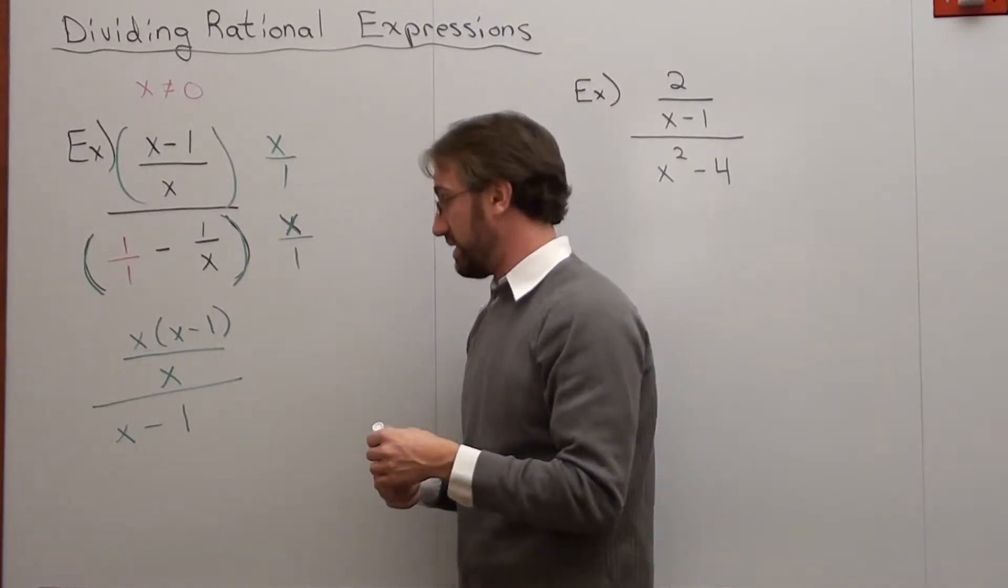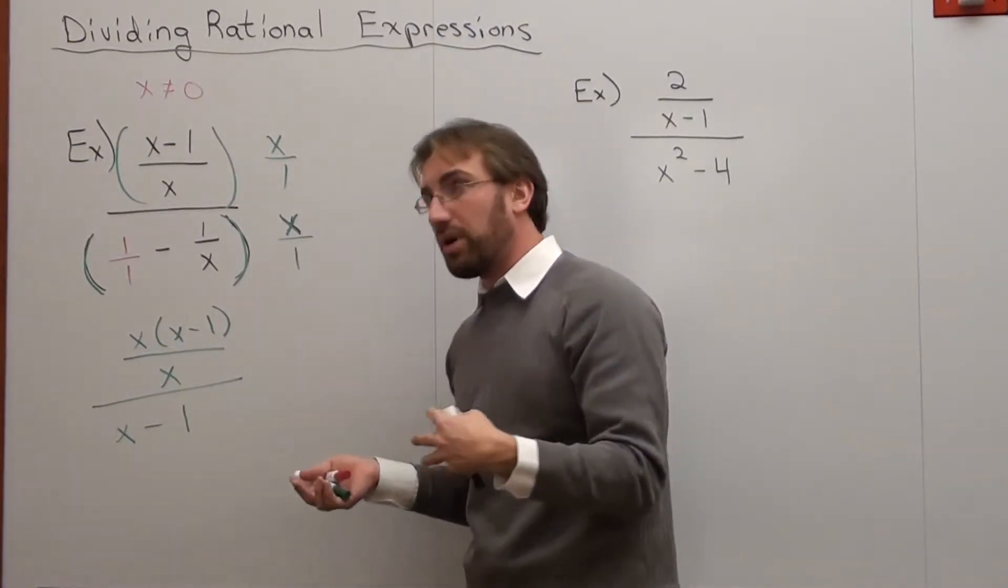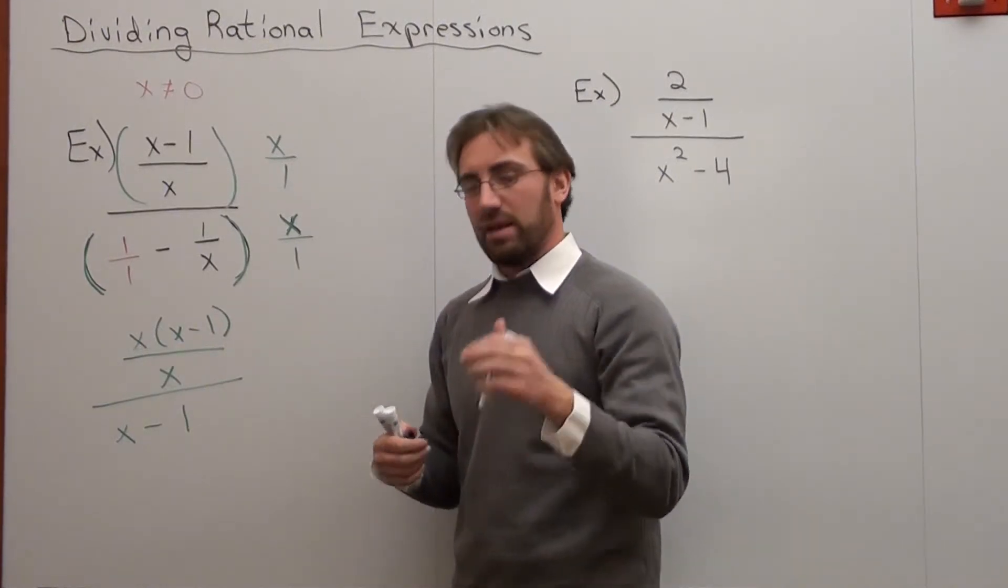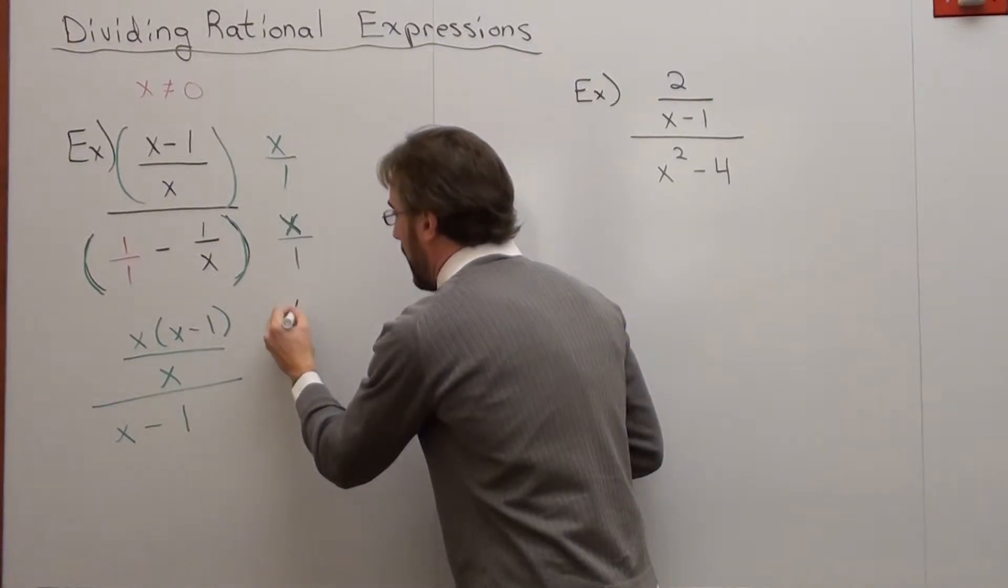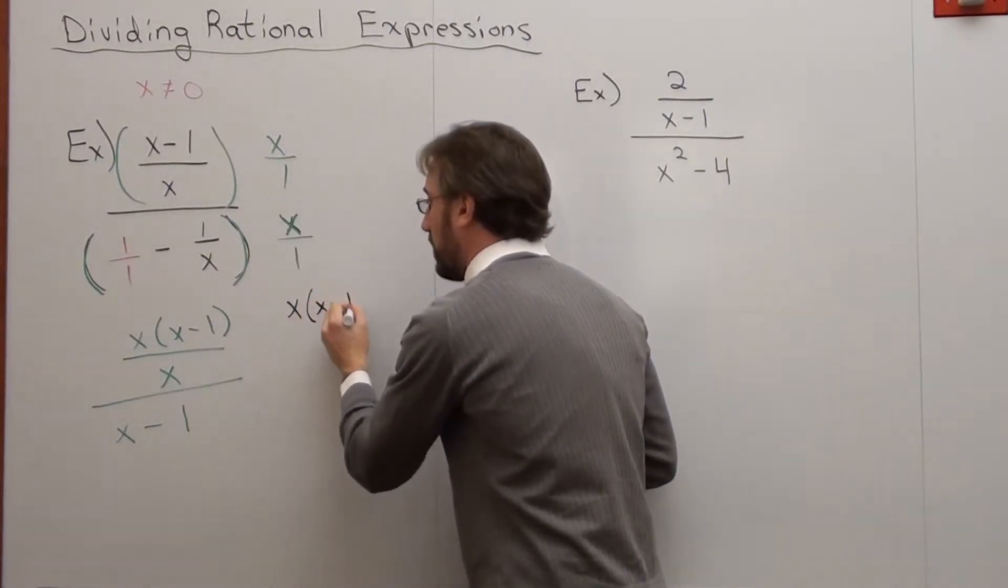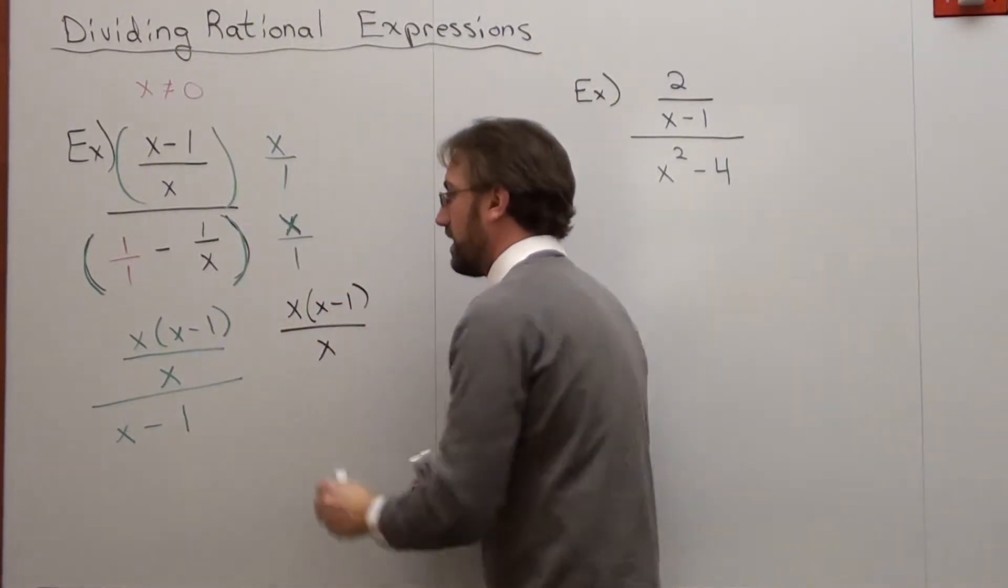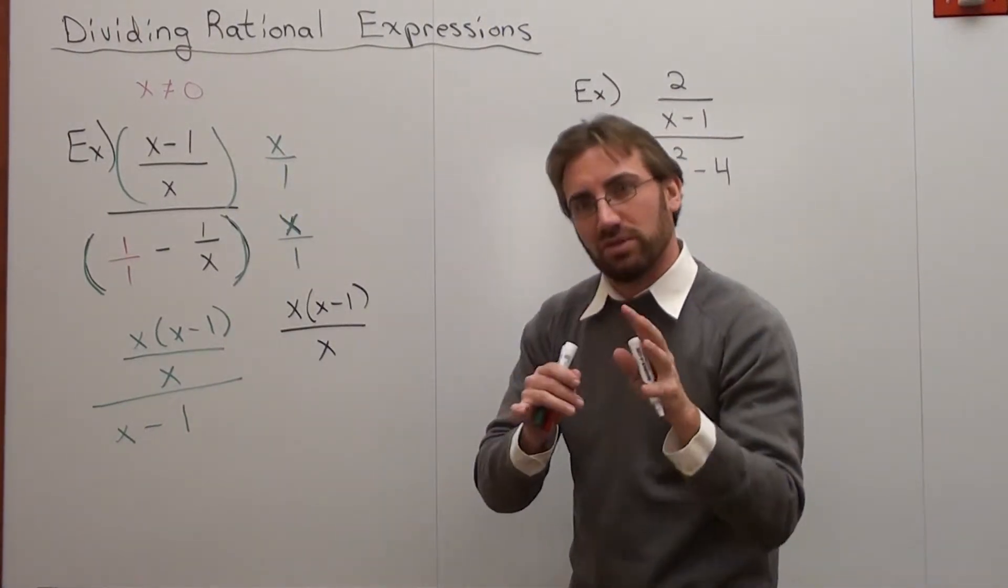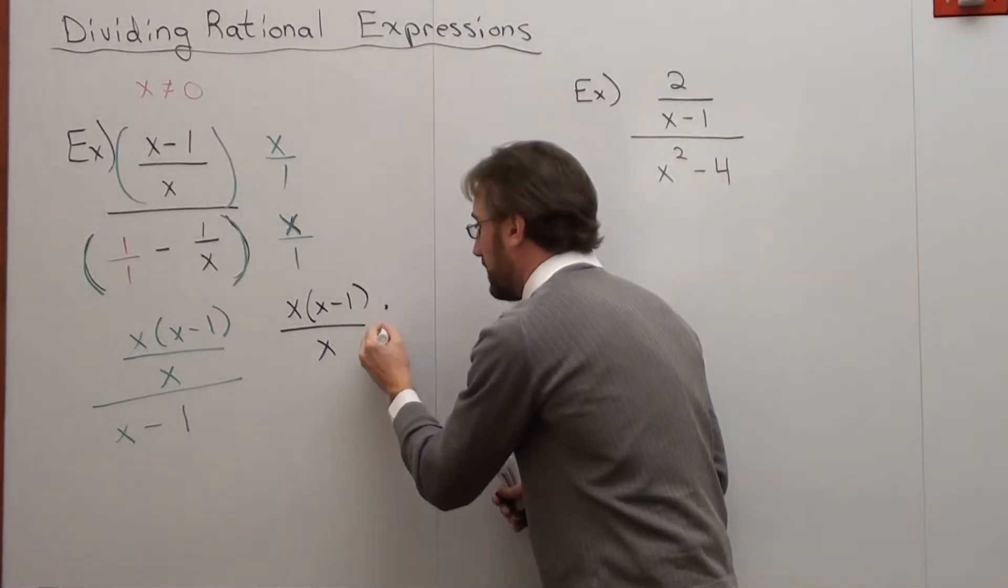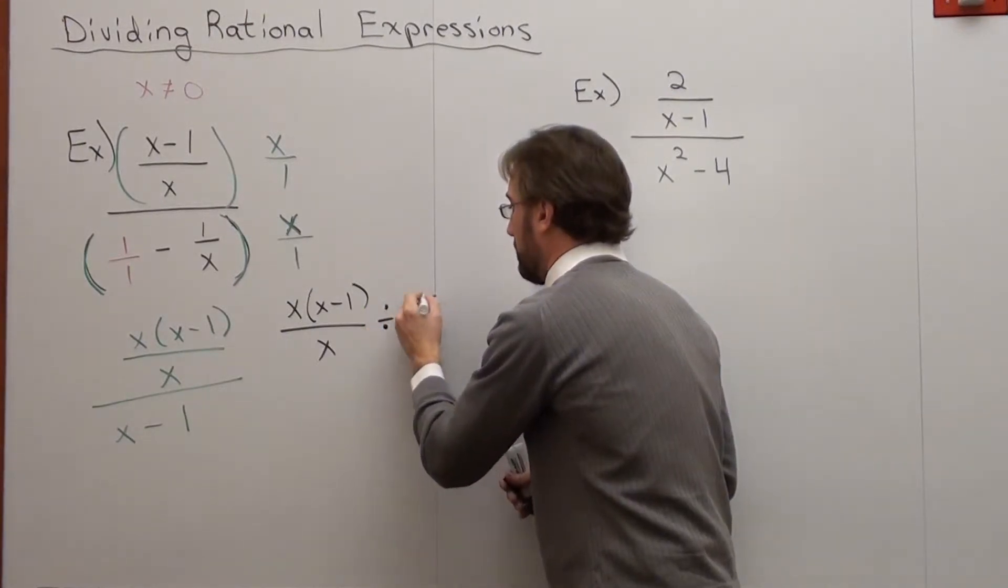Hopefully that makes sense. Now, in order to do this part of the problem, let me rewrite it so it makes a little bit more sense here. x, x minus 1 over x. That's this part right here. I'm going to rewrite it so it makes more sense. That's divided by x minus 1.